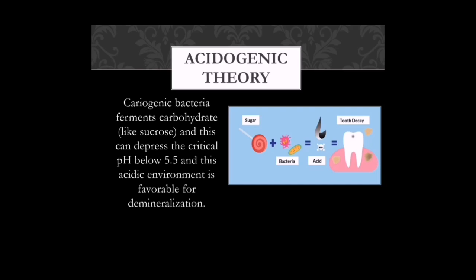The acidogenic theory describes how the initiation of dental caries takes place. Cariogenic bacteria ferment carbohydrates and depress the pH below the critical level of 5.5, and this acidic environment is favorable for demineralization. Bacteria in the oral cavity ferment sugars, releasing acids such as propanoic acid, acetic acid, and lactic acid, which drop the pH below the critical pH, causing demineralization of the hydroxyapatite crystals and initiating dental caries.